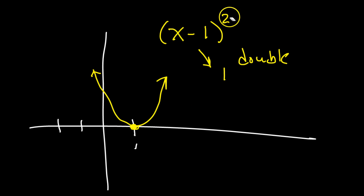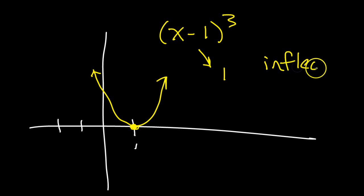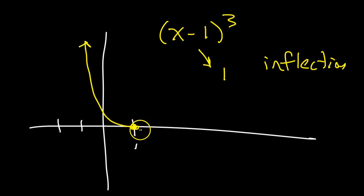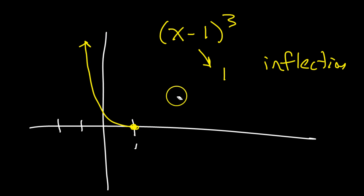What happens at a triple root? If you have x minus 1 to the third power, you have what is called an inflection. I still have a root at 1, but it's not a bounce. An inflection is like half of a parabola — curving in one way and then curving back out the other way. Half of a parabola up, the other half of a parabola down.